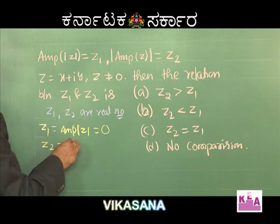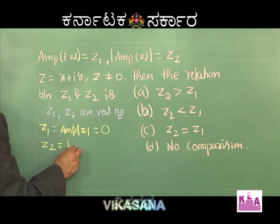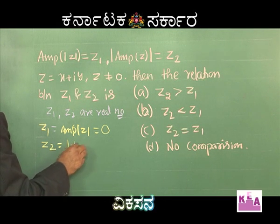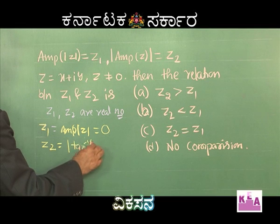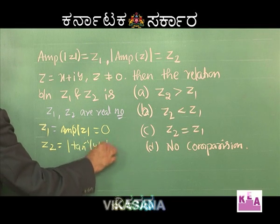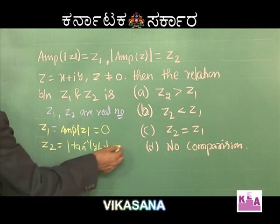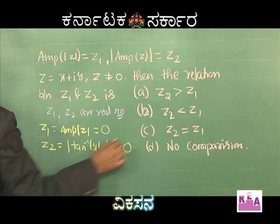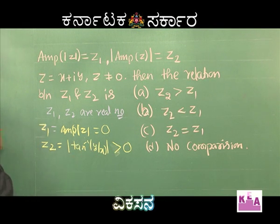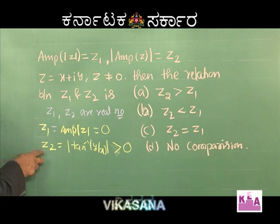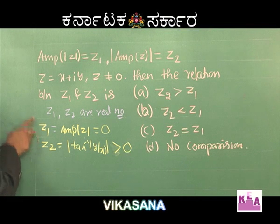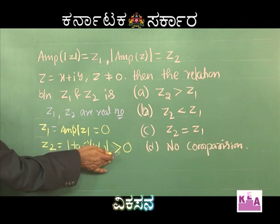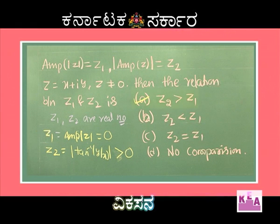What about z2? That is modulus of amplitude of z. Amplitude of z is tan inverse of y by x, which is a constant. Modulus of a constant is always a number greater than or equal to 0, provided y and x are not both 0 simultaneously. So z2 is always greater than or equal to z1, because z2 is a positive quantity and z1 is always 0. Therefore, option A is correct.